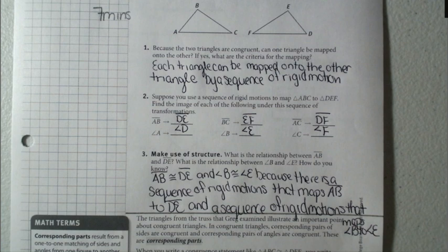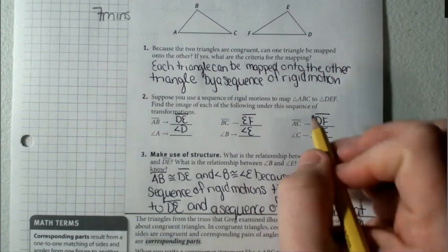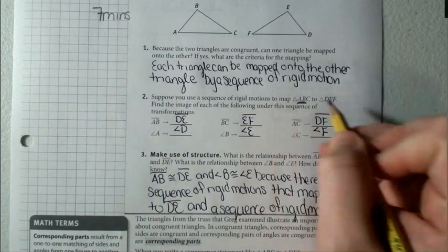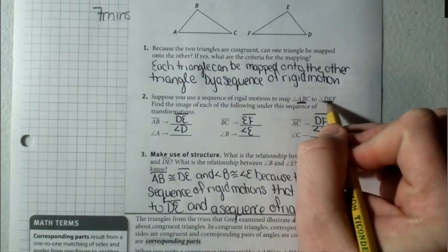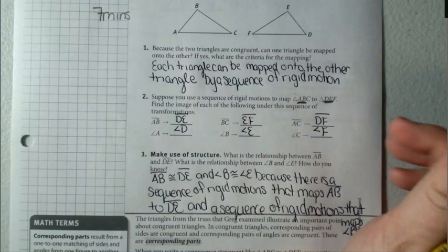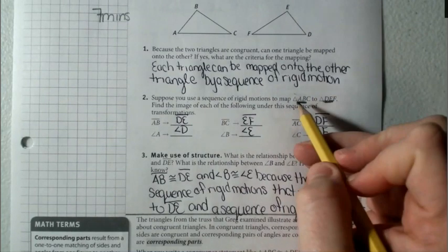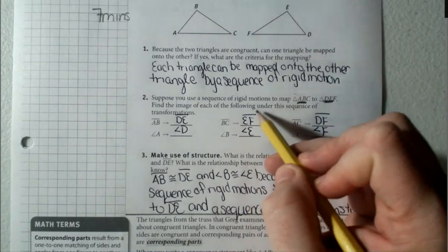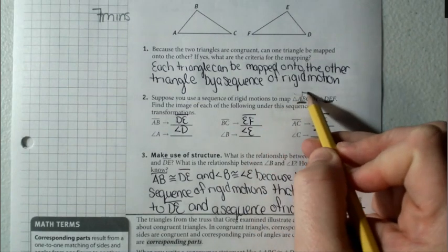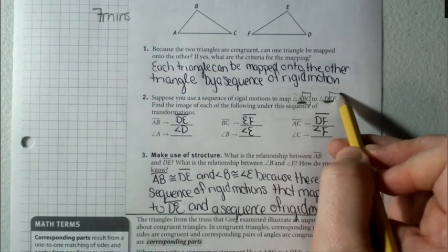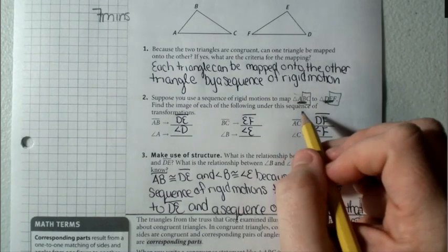In number two, I said AB maps to DE. I always look at it this way. If AB is here and it should map the same order, especially if we're trying to prove congruency. So AB to DE, BC, that's the last two, so that should be EF in the last two.